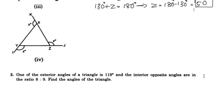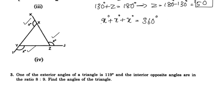Next question: using the exterior angle sum property — the sum of all exterior angles equals 360 degrees. So 3x equals 360 degrees, giving x equals 120 degrees.